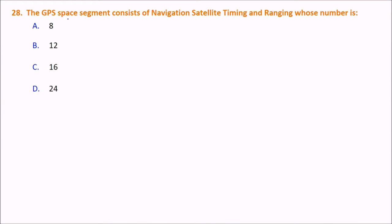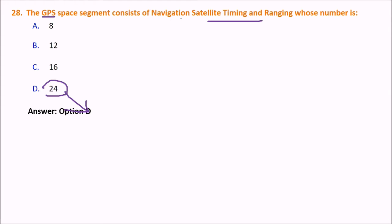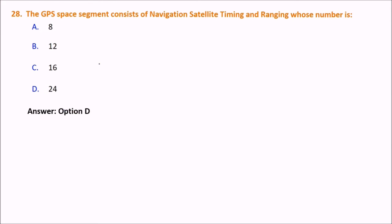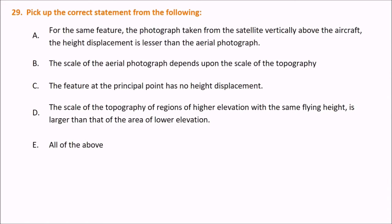GPS space segment consists of Navigation Satellite Timing and Ranging — we are talking about NAVSTAR GPS, which is the American GPS. The answer is 24. NAVSTAR stands for Navigation Satellite and Ranging. This space segment consists of 24 satellites; though there are more, at any particular instance 24 are always active.